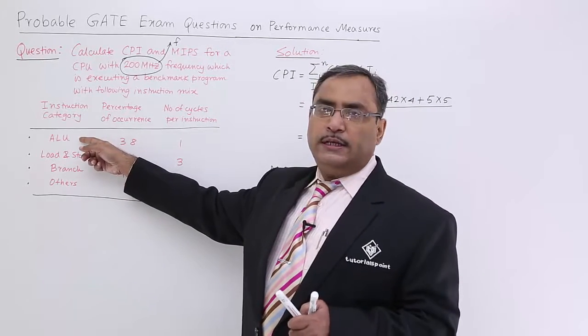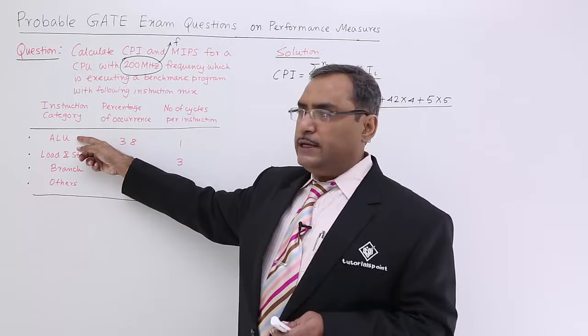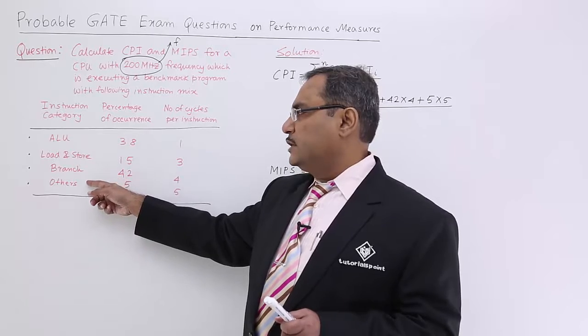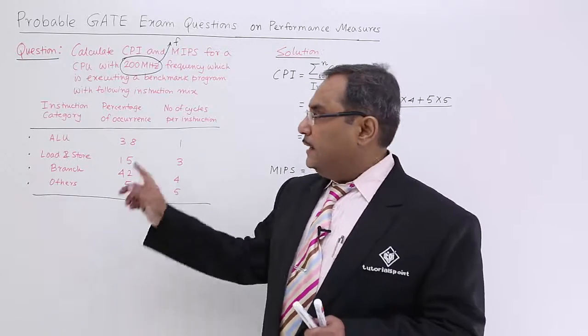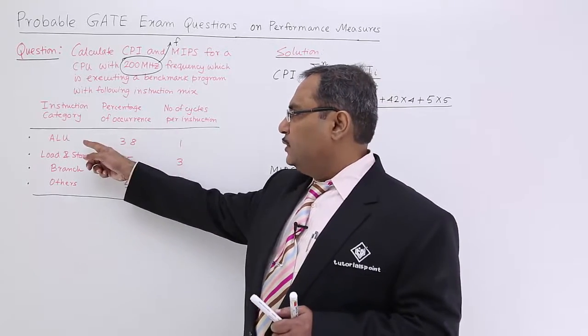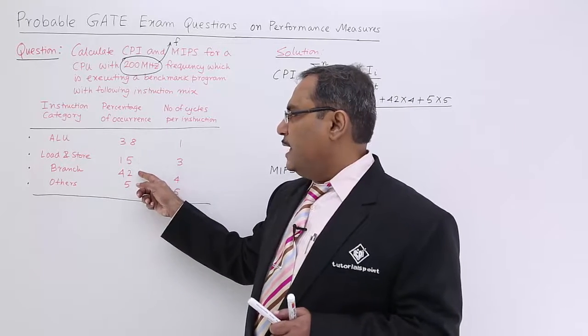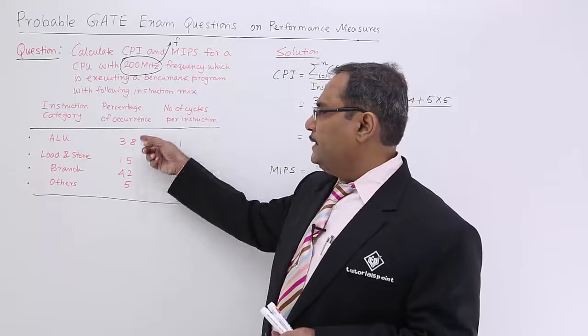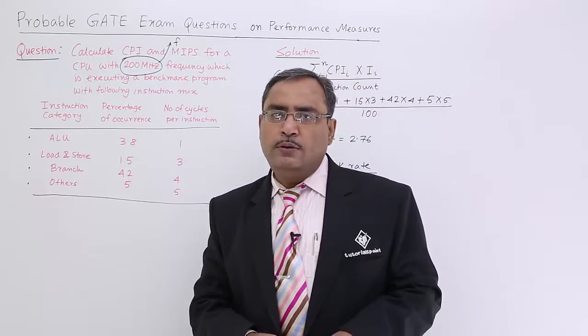What are the categories? Arithmetic and logic unit oriented instructions, load and store instructions, branch instructions, and others. This particular program has these instructions with these percentages of operation. If you go on adding them, you get 100.